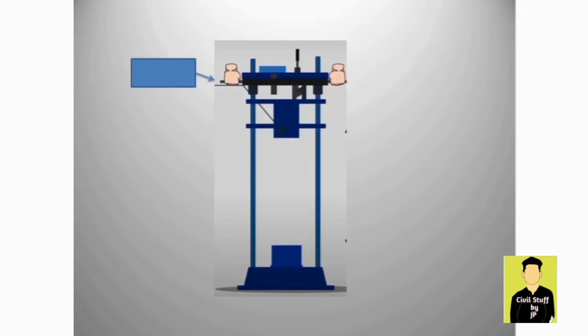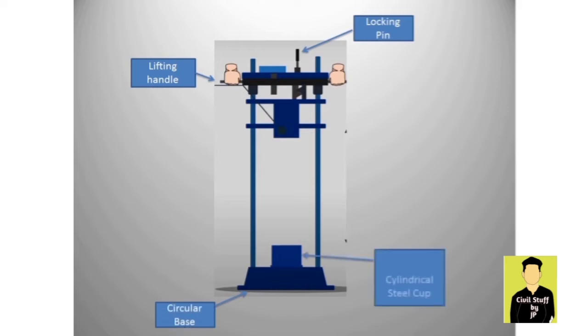Now let's see different parts of the machine: lifting handle, locking pin, circular base, cylindrical steel cup of diameter 102mm, release claw, weight 13.5 to 14kg.